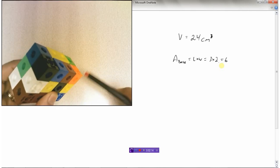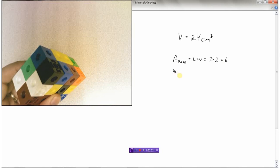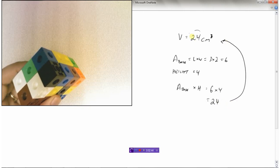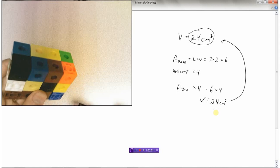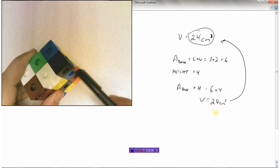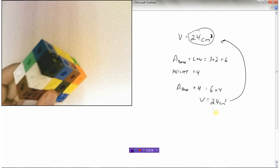The area of the base is six centimeters squared. Now look at the height of this thing: one, two, three, four. Area of the base times the height — the area of the base was six, and the height is four, so six times four is twenty-four. That's the exact same number we got by counting. So to find the volume of this prism, find the area of the base and multiply it by the height.